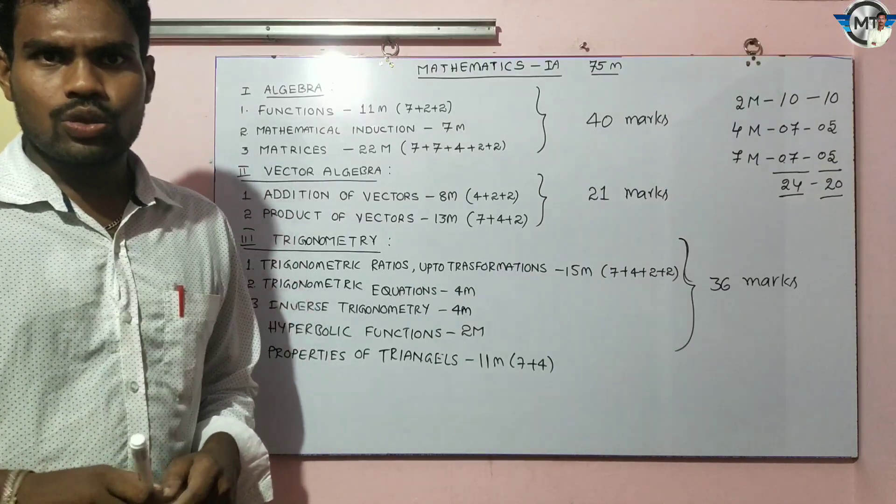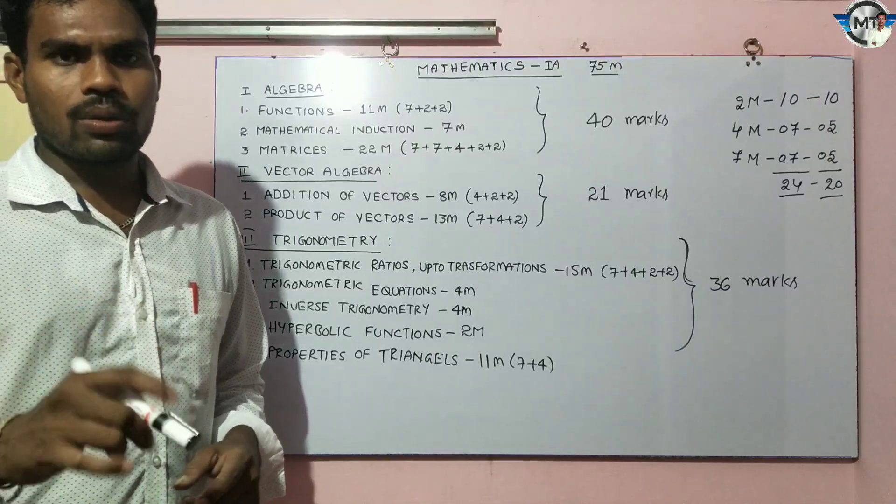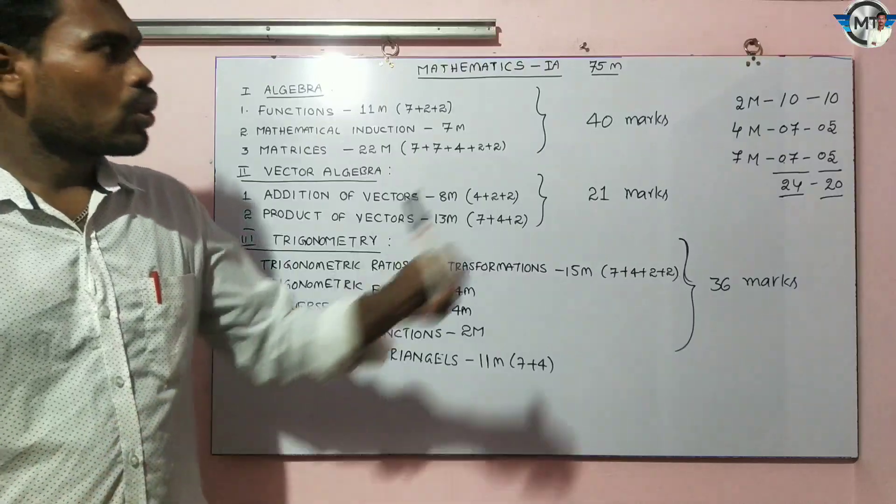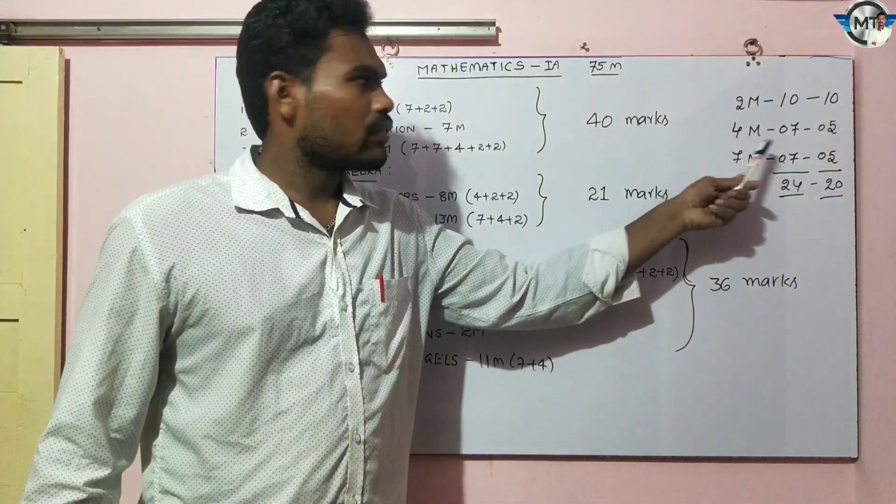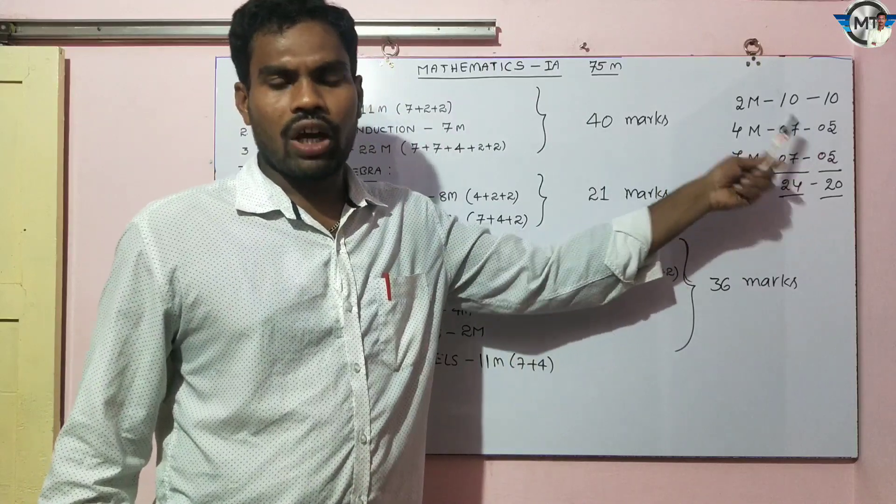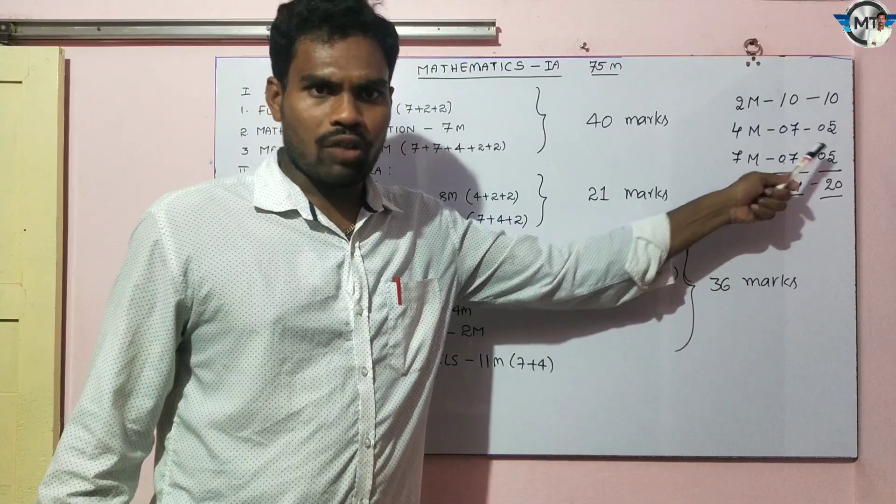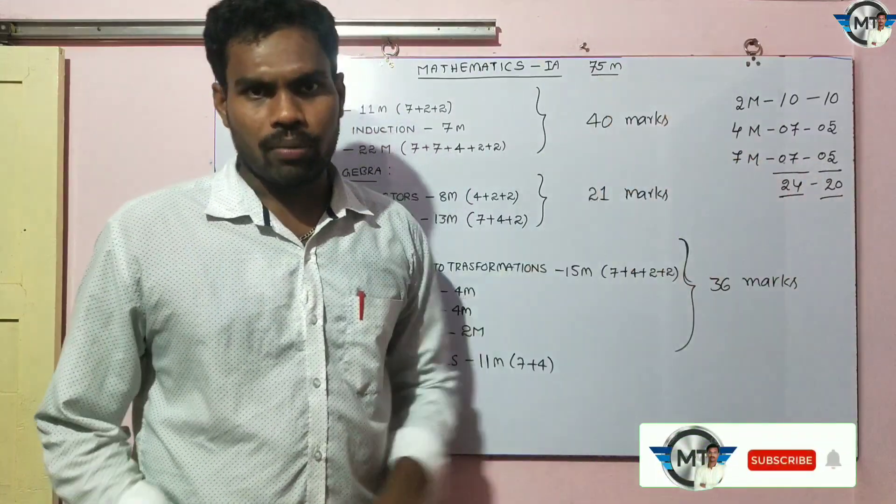Mathematics A paper is in the Junior Inter MPC. The paper carries 75 marks total. There will be 2-mark questions carrying 10 marks, 4-mark questions carrying 20 marks (5 questions times 4), and 7-mark questions carrying 35 marks (5 questions times 7), totaling 75 marks.